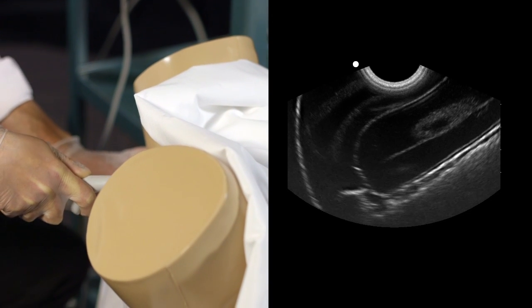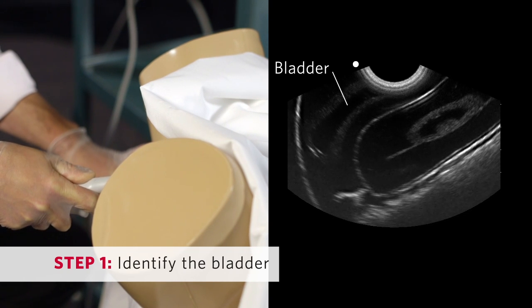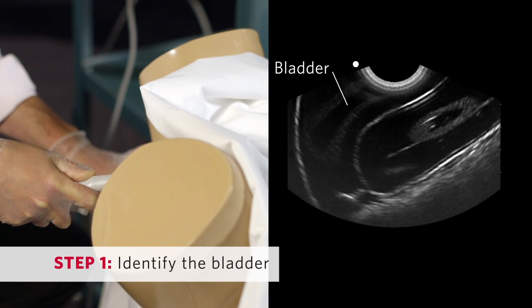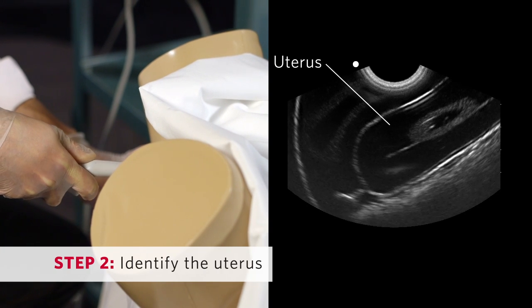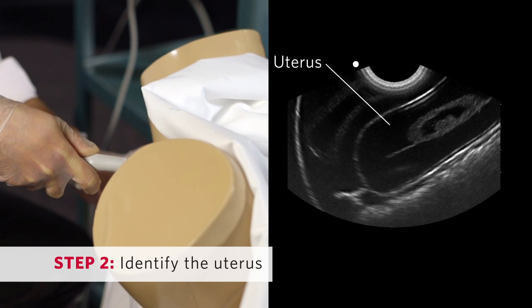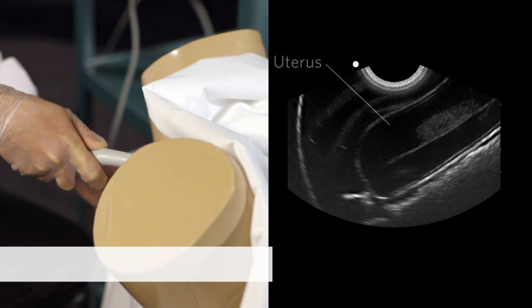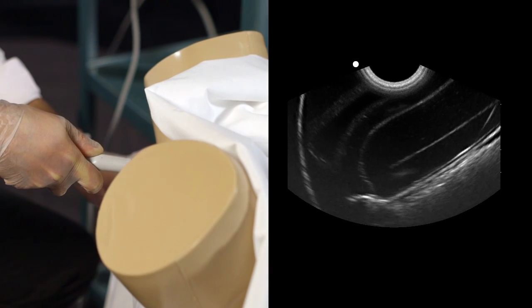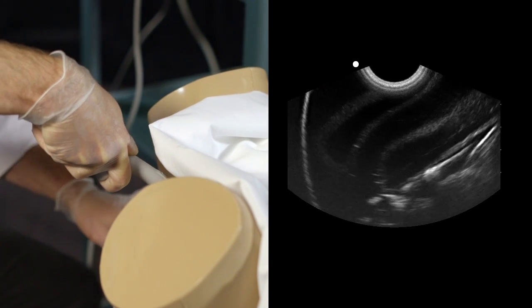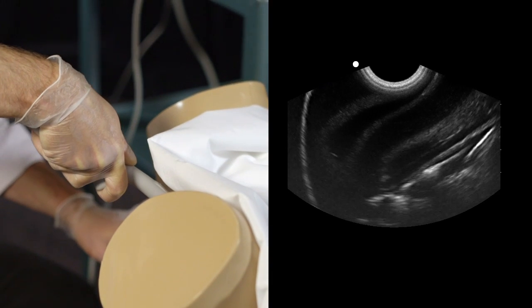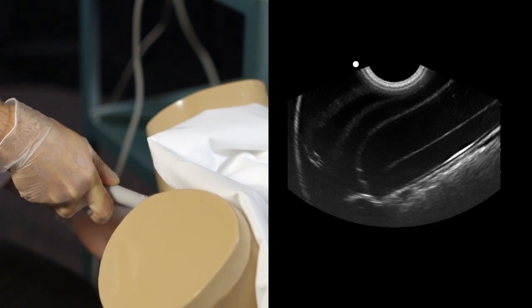Push the probe handle towards the floor to identify the bladder. In the sagittal view, the bladder is visualized in the near field to the left of the screen. Next, identify the uterus, which is always next to the bladder. If finding the uterus is challenging, perform a large sweep. A retroflexed uterus may require you to lift the probe handle towards the ceiling, aiming the probe towards the coccyx. An antiflexed uterus may require the opposite — push the handle down to raise the probe up.